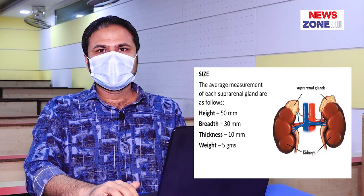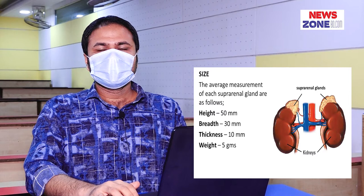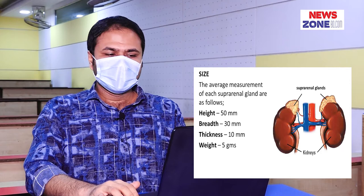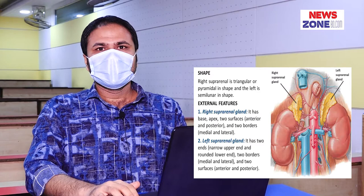Size of the suprarenal gland. The average measurements of the suprarenal gland are as follows: height is 50 millimeters, breadth is 30 millimeters, thickness is 10 millimeters, and weight is 5 grams.